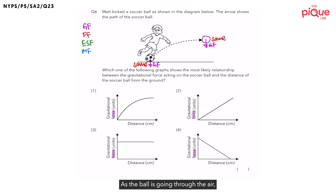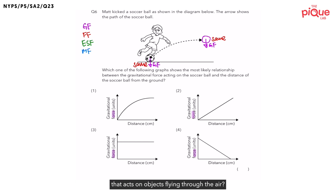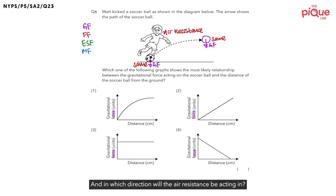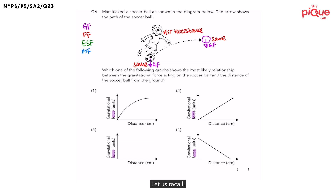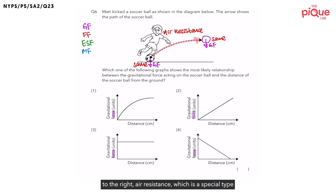Next, let's talk about frictional force. As the ball is going through the air, will there be any frictional force acting on it? Remember, frictional force will cause an object to slow down. Since we know that the soccer ball will slow down and drop to the ground eventually, frictional force must be acting on the ball. Do you remember the special type of frictional force that acts on objects flying through the air? It is called air resistance. And in which direction would air resistance be acting? Frictional force opposes motion, and since the ball is flying diagonally upwards to the right, air resistance will be acting diagonally downwards to the left.